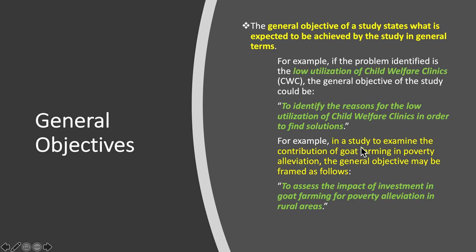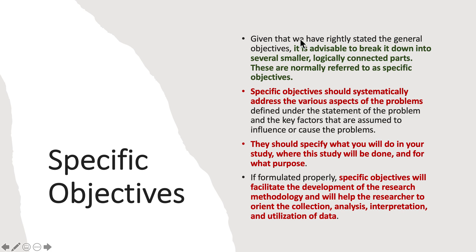For example, in a study to examine the contribution of good farming in poverty alleviation, the general objective may be: to assess the impact of investment in good farming for poverty alleviation in rural areas. Another example: if attendance at a university is very low, the general aim would be to find out the reasons that hinder students from coming to college.